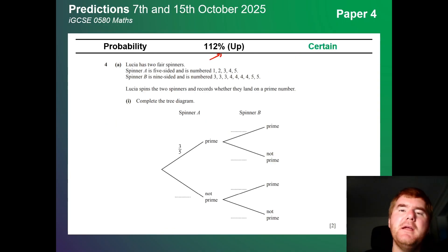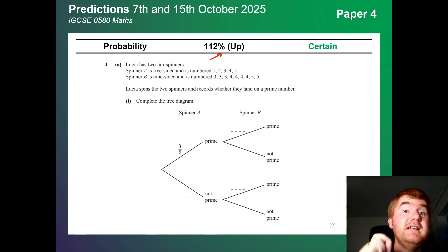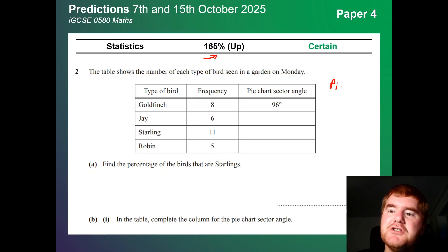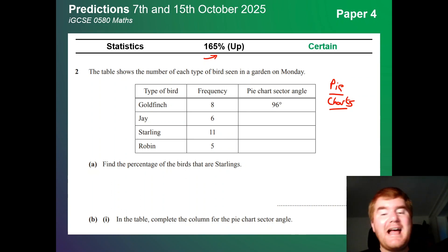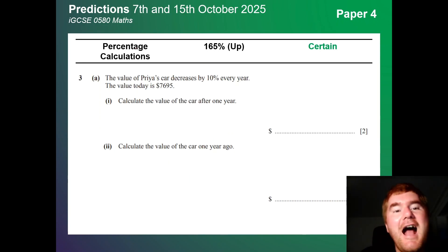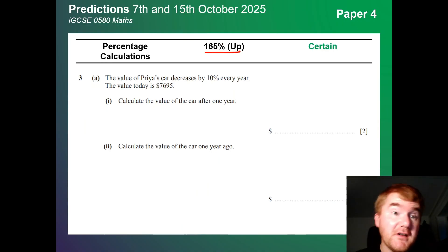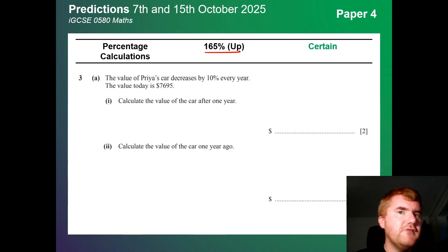Probability is pretty much certain to appear on both Paper 2 and Paper 4. Tree diagram questions are a good example — make sure you know these really well. Statistics has always been a huge calculator topic, up at 165%. They test knowledge of pie charts — at extended level they won't usually ask you to draw one, but they'll ask you to work out the sector angle. Percentage calculations are also at a whopping 165%, usually one big question with lots of subparts. It's really about reading the question carefully and applying the knowledge.